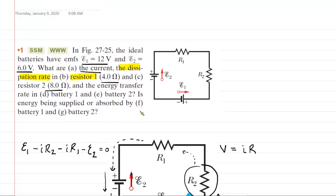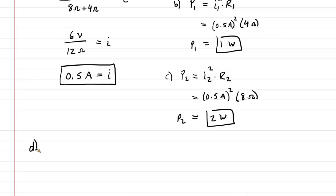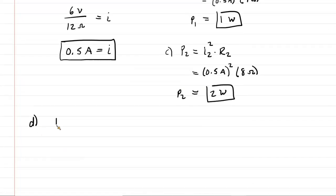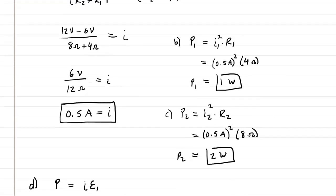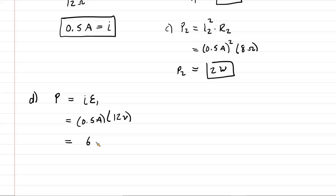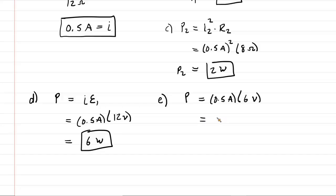Part D asks for the energy transfer rate in battery one — energy transfer rate is another expression for power. The power equation for a battery is P = I × EMF. Taking the current of 0.5 amps multiplied by the EMF of battery one, which is 12 volts, gives 6 watts. For part E, the same calculation for battery two: 0.5 amps times 6 volts equals 3 watts.